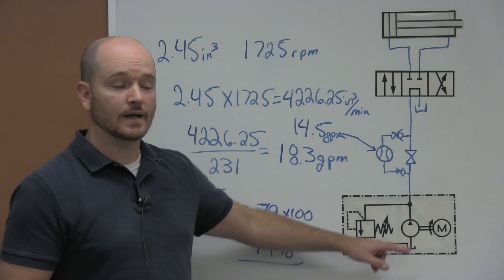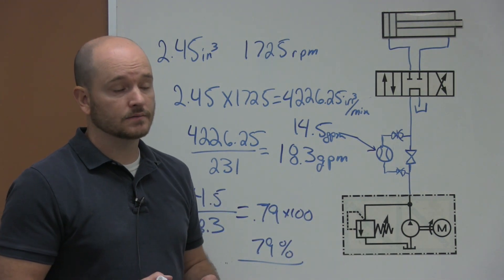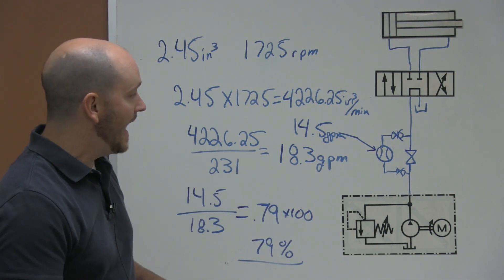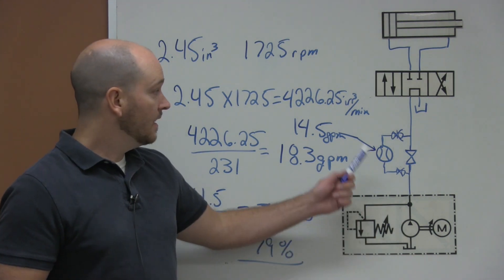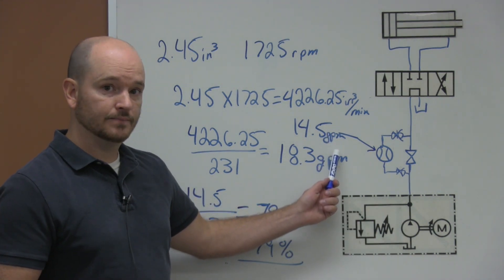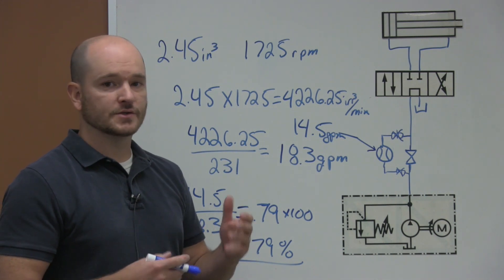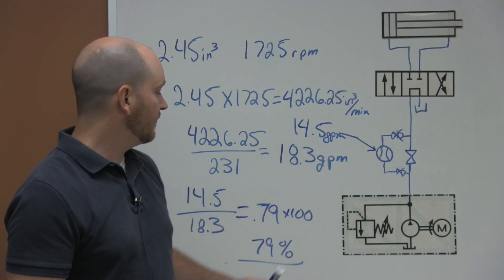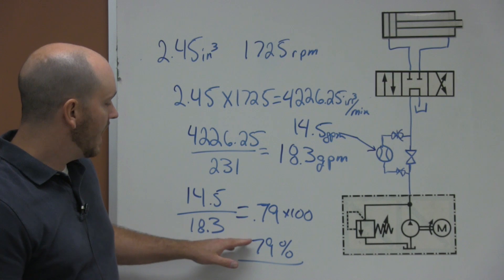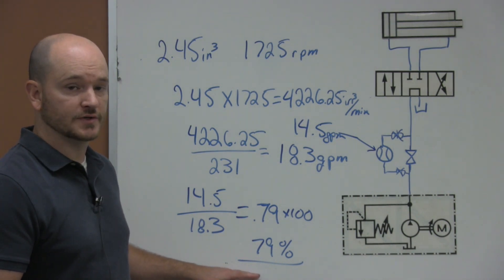Which is really good. An 80% efficient pump isn't bad at all. Now as this pump ages, this will probably go down. As wear and tear and all sorts of things can happen, this value of 14.5 may go down, and my percentages will start to go down.